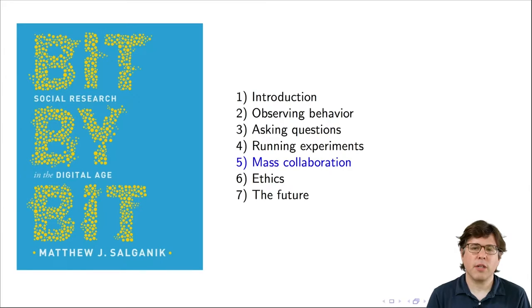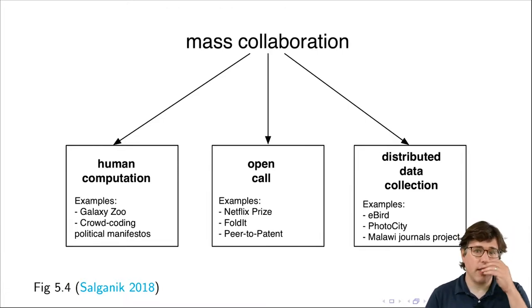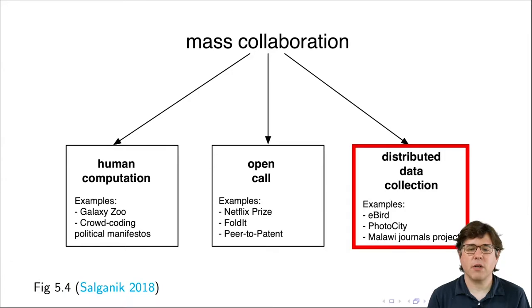Hello. This is the fourth video in a series about mass collaboration. This video is about distributed data collection, which is covered in chapter five of Bit by Bit. As I talked about in the first video, I divided mass collaboration into three categories, and this video is about the third category: distributed data collection.